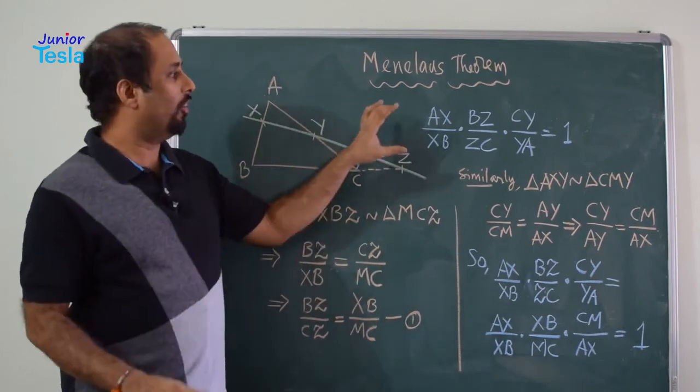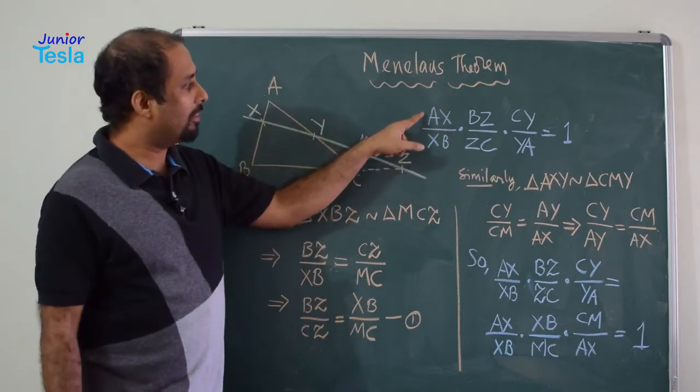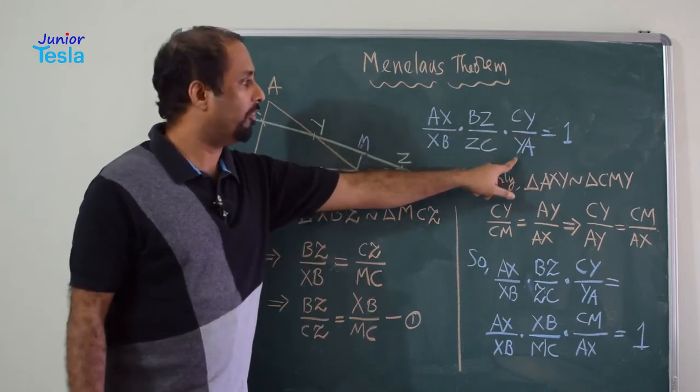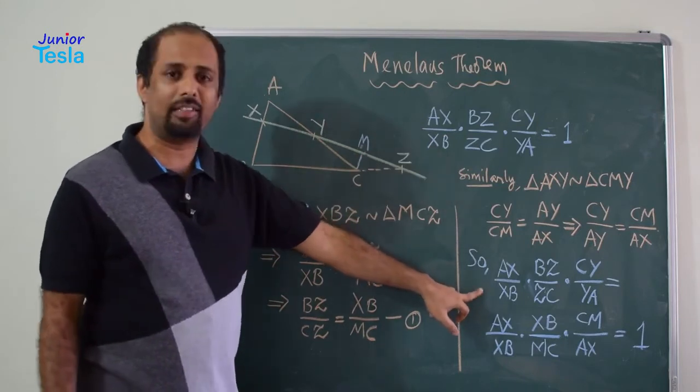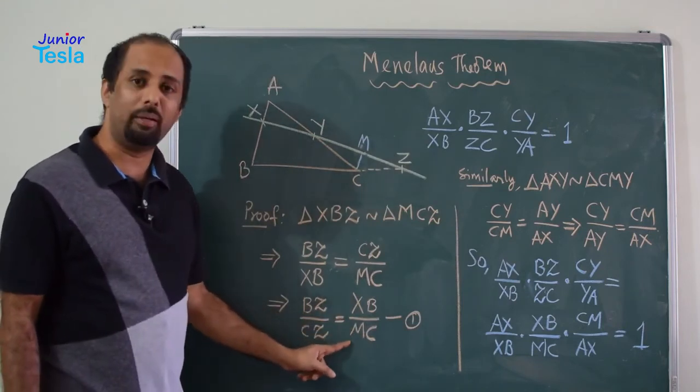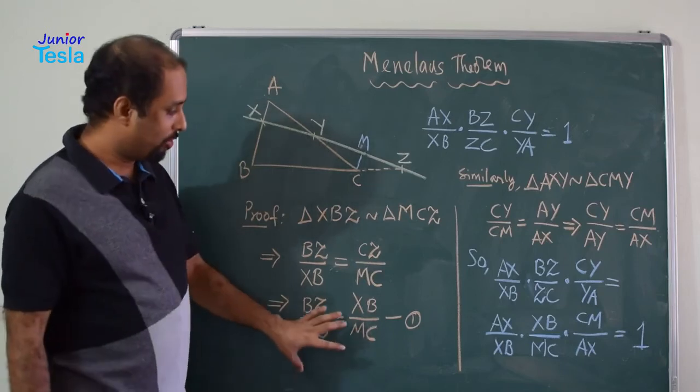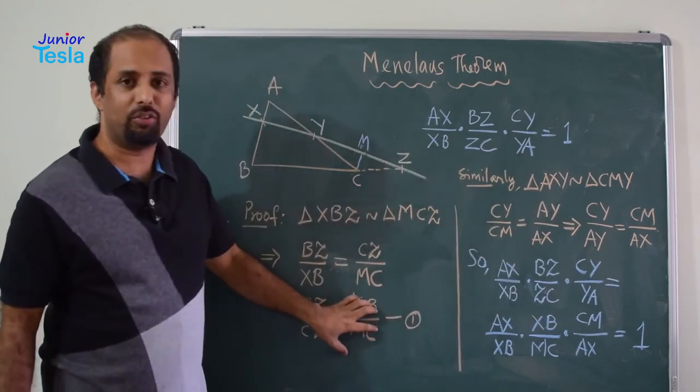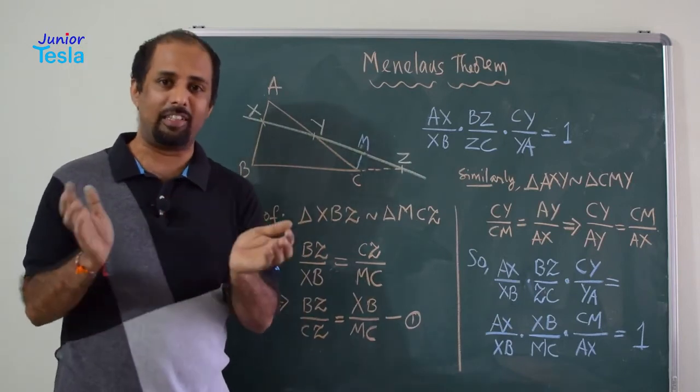Now, let us take the original statement, Menelaus theorem's statement. It says AX by XB into BZ by ZC into CY by YA is equal to 1. Now, let me write it as it is. Now, in the place of BZ by ZC, what I can write is XB divided by MC because BZ by ZC is equal to XB divided by MC. So, I am using this proportion. Now, I am replacing this ratio with this ratio. So, I have written this XB divided by MC in the place of BZ divided by ZC.